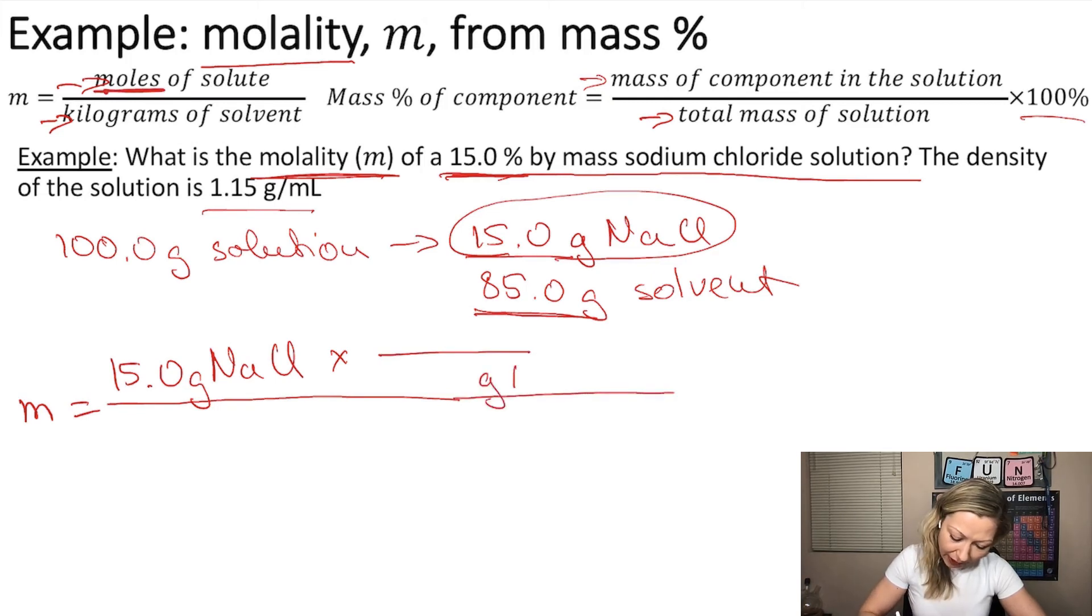So grams of NaCl on the bottom, moles of NaCl on top, and the molar mass of sodium chloride is actually 58.44. And on the bottom,